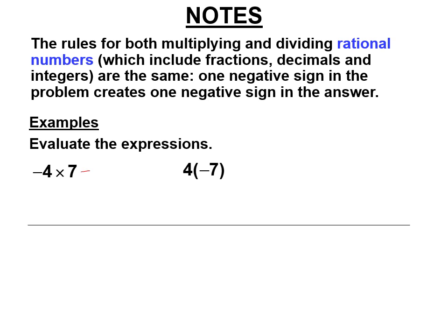Negative four times seven is negative 28. Four times negative seven — that's just another way to write multiplying — is the same. It has one negative in the problem, so the answer is negative. Two times negative seven times two: two times negative seven is negative 14, negative 14 times two is still negative 28. It doesn't matter how many numbers there are — if there's one negative in the problem, the answer is negative.